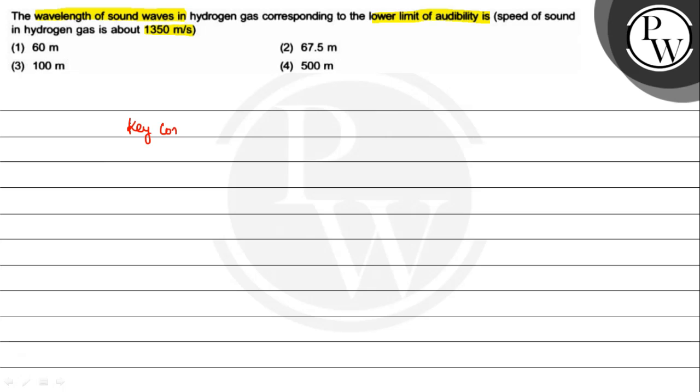The key concept of this question is the wavelength of sound waves corresponding to the lower limit of audibility. The limit of audibility is 20 hertz to 20,000 hertz. What does this mean?